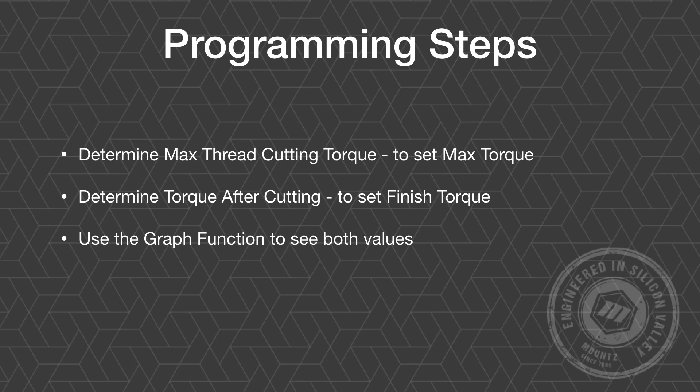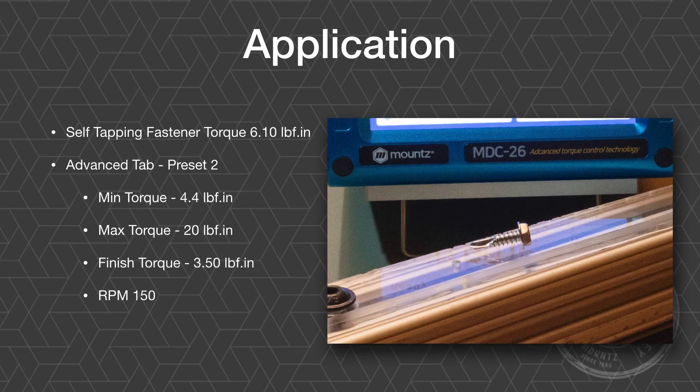In this application, we have a self-tapping screw going through a piece of plexiglass, and the final torque is 6.1 inch pounds. We have our min torque set to 4.4, our max torque set to 20, our finishing torque set to 3.5, with the RPM at 150. So once the system sees 4.4 it will switch into thread tapping mode, and once it sees 3.5 it will exit the mode and then look for the preset final torque.